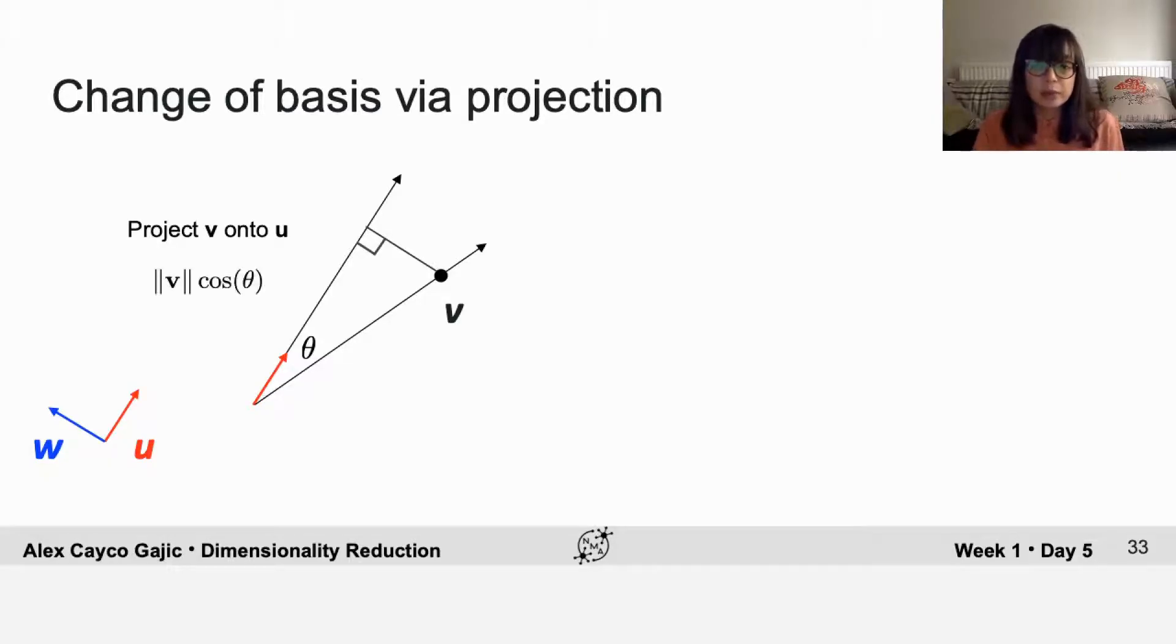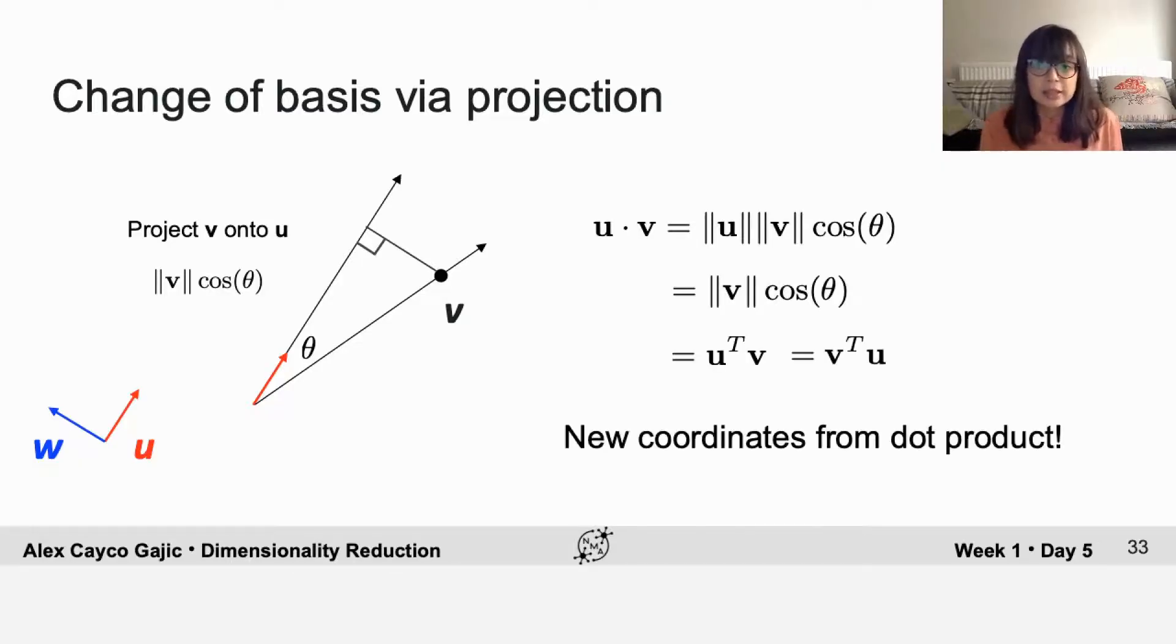So that boils down to the magnitude of V times the cosine of theta. This should look familiar to you because it's a similar form to the dot product. And it turns out to be exactly equal to the dot product if you assume that your U is normalized. So for an orthonormal basis, actually your new coordinates just come from the dot product.